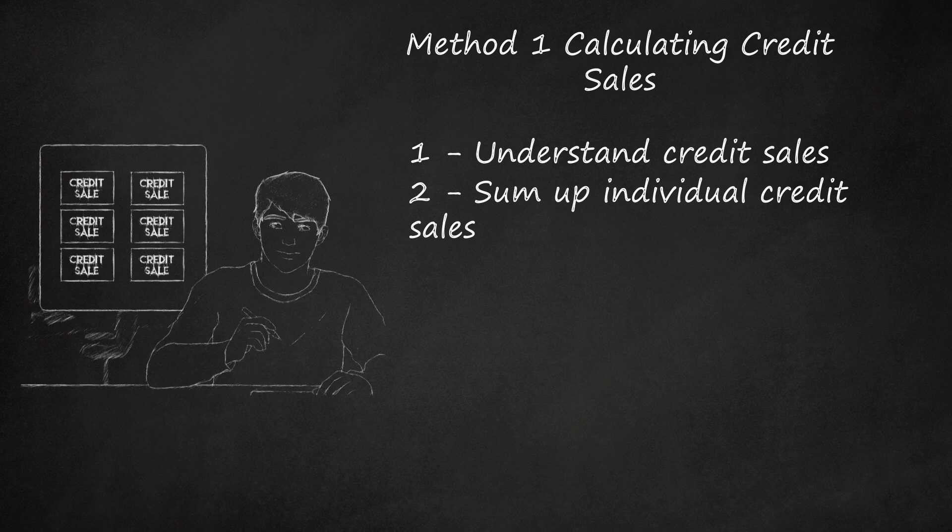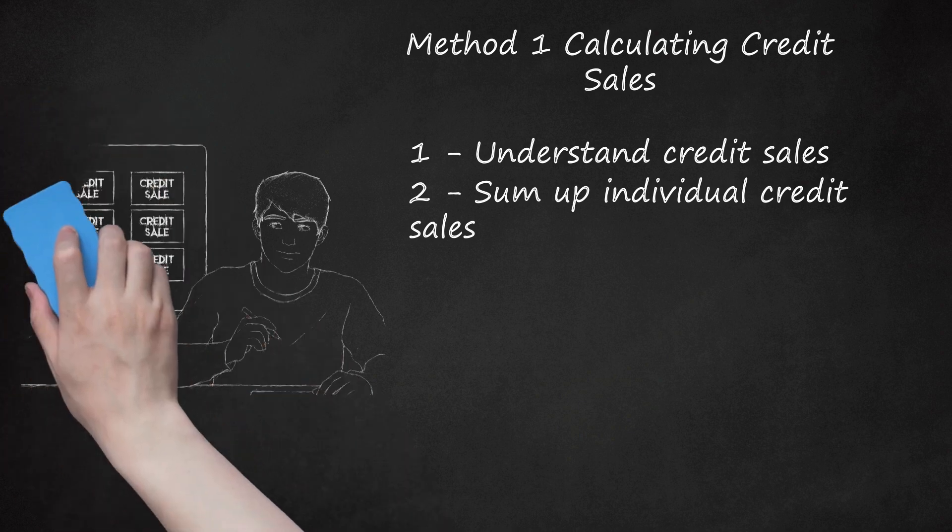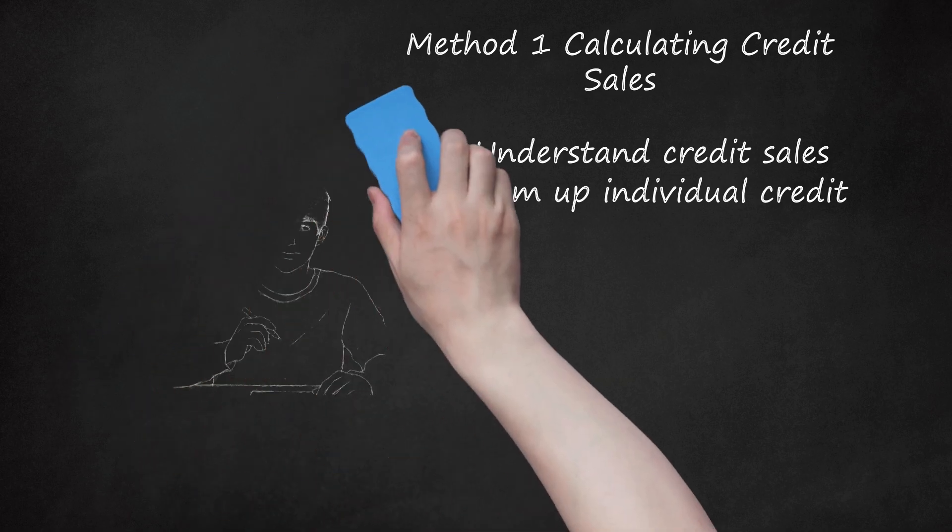If you want a total for annual or quarterly credit sales, you can simply start recording a credit sales amount at the beginning of that period. Then, each time you update accounts receivable, you can add the sale amount to your credit sales amount for that period. Remember that sales tax is included in credit sales amounts.